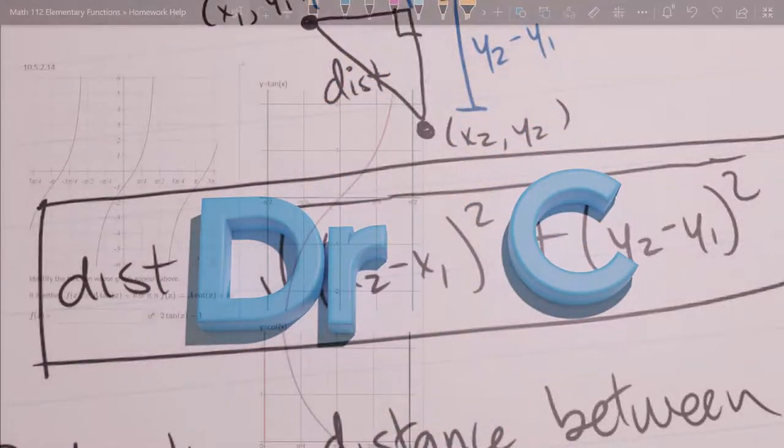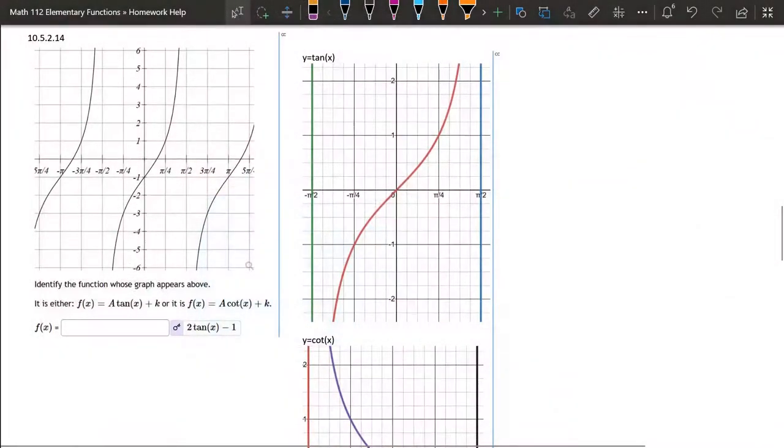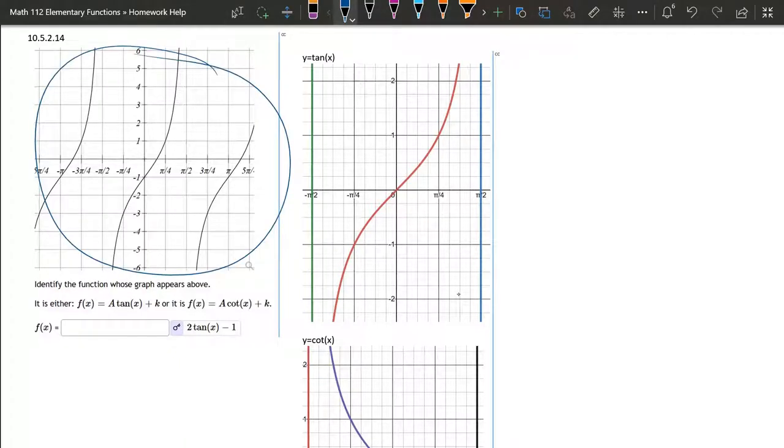In this question, we have to decide if it's either a tangent or cotangent graph here, and we have to make a choice about what the vertical stretch is, and also the vertical shift. So first thing, is it tangent or cotangent?